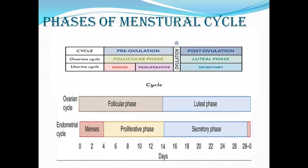The cycle can be named according to ovulation. Ovulation is an event in the ovary, and it divides the ovarian cycle into the follicular phase and the luteal phase, interspersed by ovulation. Before ovulation is the follicular phase; after ovulation is the luteal phase. In the uterus, the pre-ovulatory phase is called the proliferative phase and the post-ovulatory phase is the secretory phase.